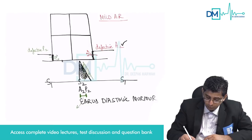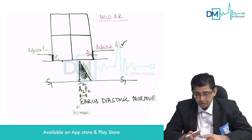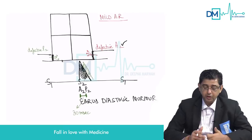If both mild aortic and mild pulmonic regurgitation are present, the aortic regurgitation murmur will occur first, followed by the pulmonic regurgitation murmur, due to the 30-millisecond time lag between aortic and pulmonic valve closure. Both are early diastolic murmurs, in contrast to the mid-diastolic murmurs discussed previously.